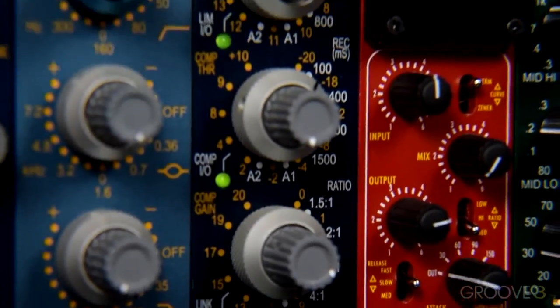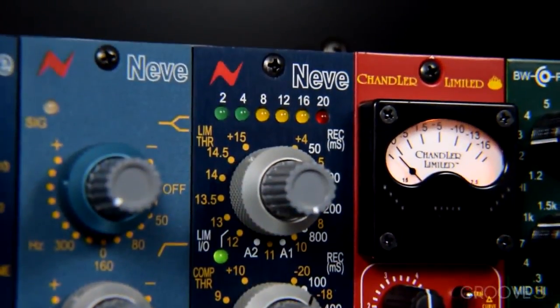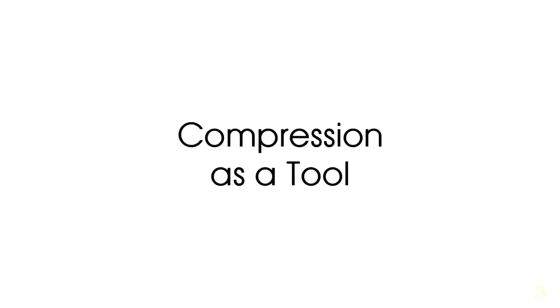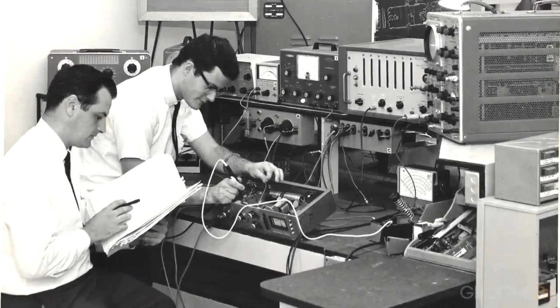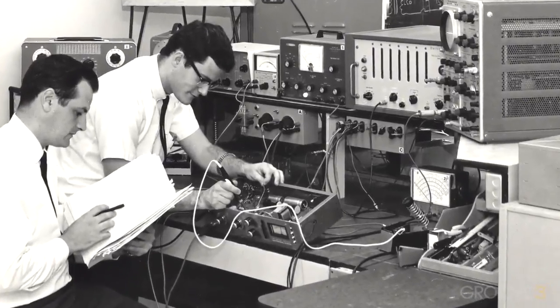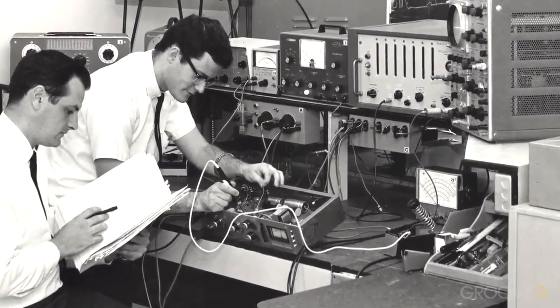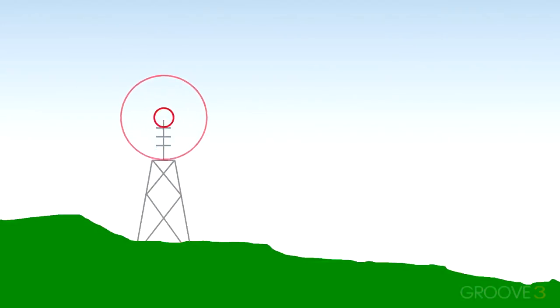In this video, we're going to take a look at the brief history of compression — how exactly dynamic range compression came about and why we started using it. Compressors and limiters are actually a tool that were created for use in the broadcast industry. When we transmit audio over the air to radio, we do so by modulating a radio signal.